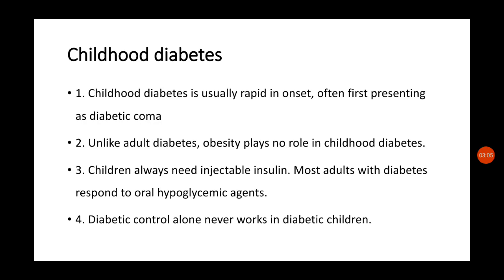Childhood diabetes is usually rapid in onset, often first presenting as diabetic coma. Comparing with adult diabetes, which is slow in onset — where the person may present with increased food intake and obesity before progressing to diabetes — in childhood diabetes, suddenly the child becomes unconscious and is brought to casualty in a coma condition. This rapid onset and first presentation as diabetic coma is the serious nature of this condition.